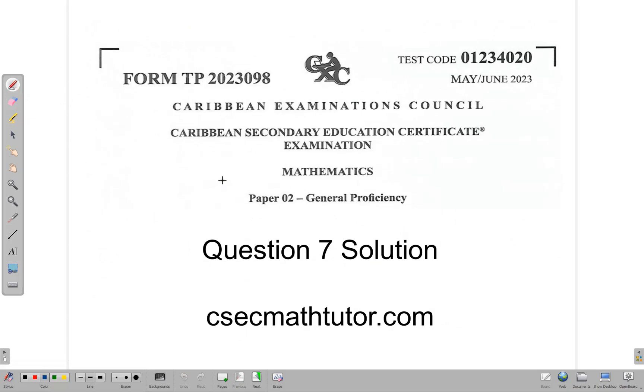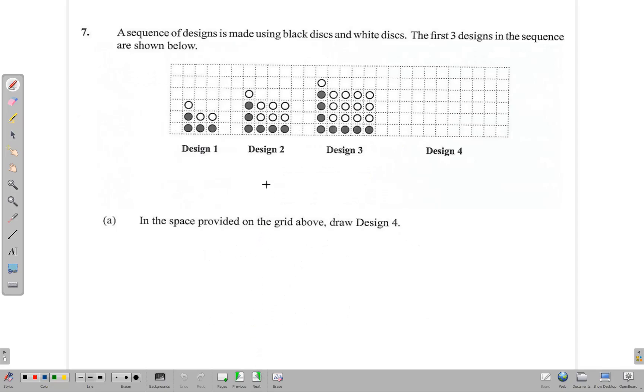Hello and welcome. Thank you for joining as we go through the solution for question 7 from the May-June 2023 C-Second Mathematics paper 2. It's our pattern and sequence question, one of those favorite questions that we like to do. Let's notice the pattern here in our diagram. We see a sequence of diagram designs are made using black disks and white disks. The first three designs are shown.